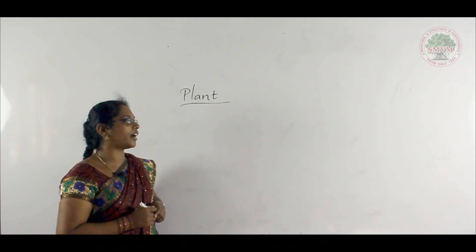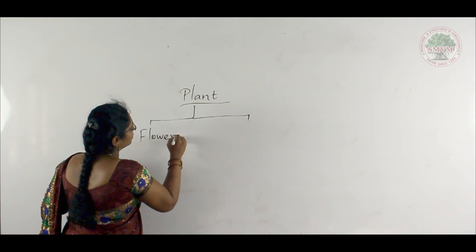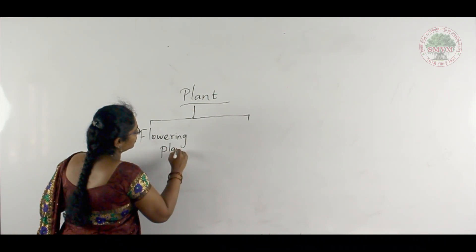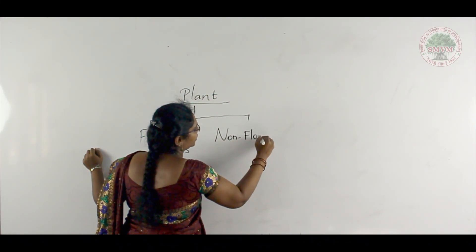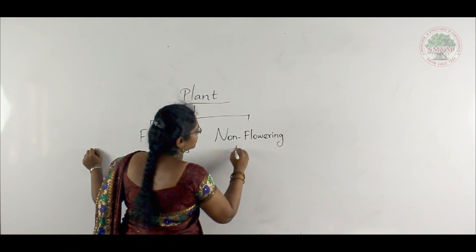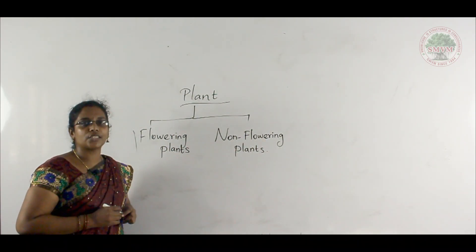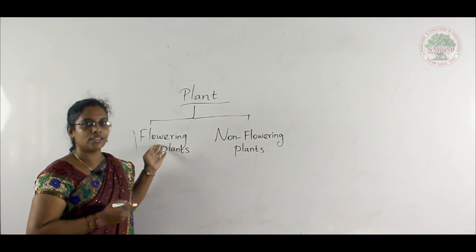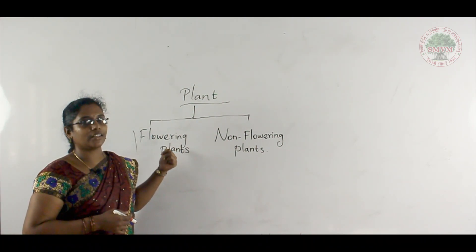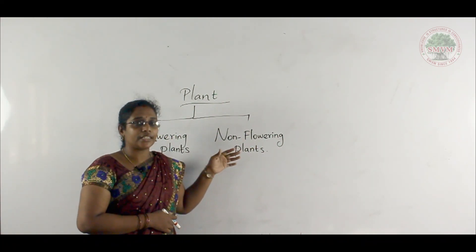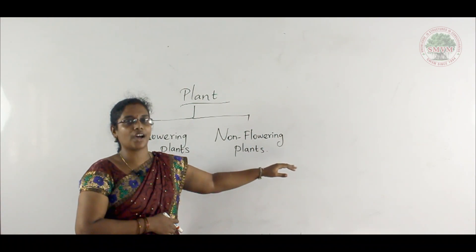Plants are of two kinds. One is flowering plants and another one is non-flowering plants. Flowering plants means the plants which can give rise to flowers, and those are called as flowering plants. Plants which cannot bear any flower are called as non-flowering plants.